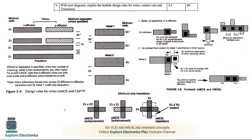Coming to transistors: N-MOS, P-MOS, and depletion-type transistors are shown. When polysilicon crosses a diffusion layer it forms a transistor. Since diffusion has width 2 lambda and polysilicon also has width 2 lambda, the crossing at the center forms a channel with size 2 lambda × 2 lambda — that is what the channel size means.